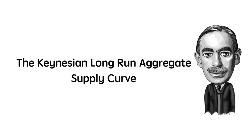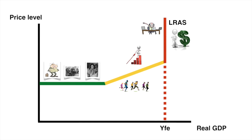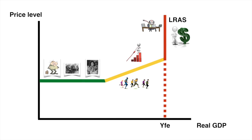In this video we will take a look at the factors that shift the Keynesian long-run aggregate supply curve and increase the productive potential of an economy as a whole. Referencing our earlier video, this is our Keynesian LRAS.